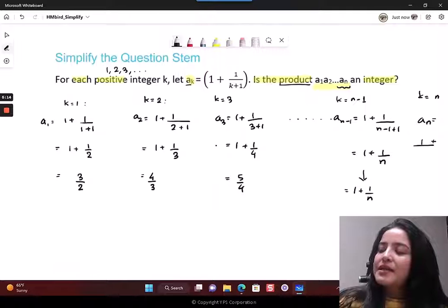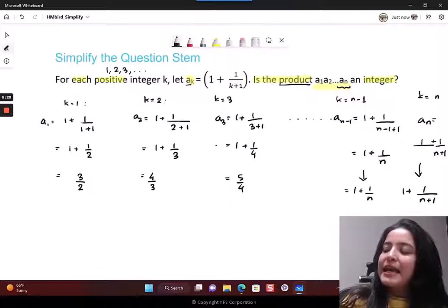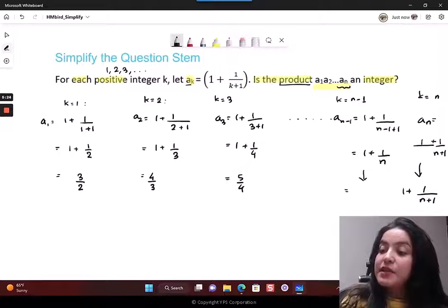In that case, the n minus 1th term is 1 plus 1 upon n minus 1 plus 1, and the 1 and the minus 1 cancel out. This is n plus 1 upon n.